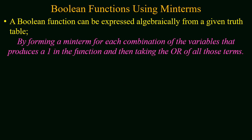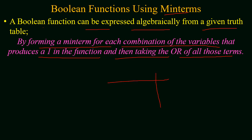We will start constructing a boolean function using min terms. If you have any truth table, a boolean function can be expressed algebraically by forming a min term for each combination of the variables that produces a 1 in the function output, and then taking the OR of all those terms. You look for input binary combinations where the output is 1, form min terms for those combinations, and add all these min terms to get the boolean function.